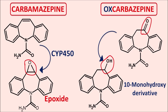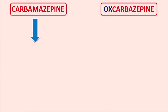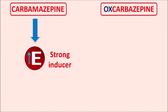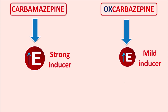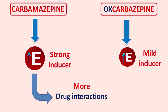Because oxcarbazepine does not depend heavily on the cytochrome P450 system for activation, it has less effect on induction of that system. Carbamazepine is a strong inducer of the CYP450 system, whereas oxcarbazepine is only a mild inducer. Therefore, carbamazepine shows more drug interactions compared with oxcarbazepine, which is an important advantage of this newer generation drug.